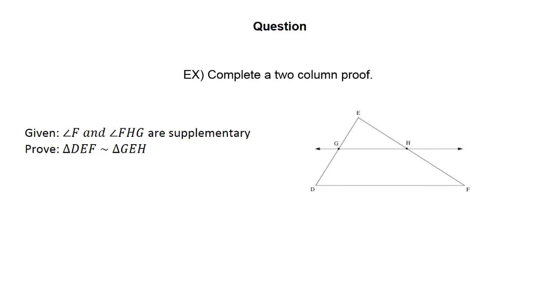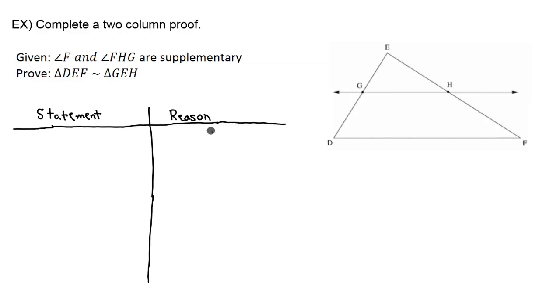This question is asking us to perform a two-column proof to prove that triangle DEF is similar to triangle GEH. The first thing that I do is set up my two columns. The first column is always going to read the statement, and then the second column is going to be the reason. The first statement is going to be what we're given here. It says that angle F and angle FHG are supplementary. And the reason we know that is because it was given.